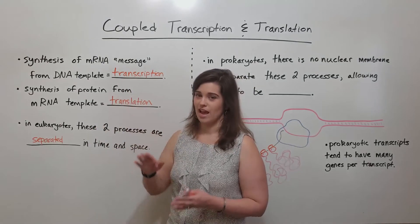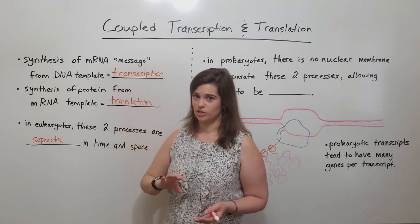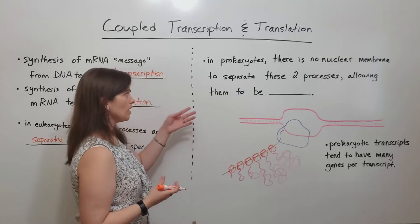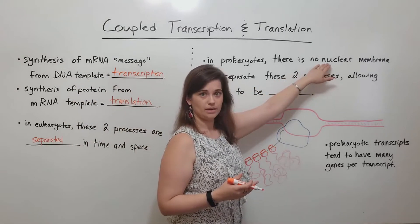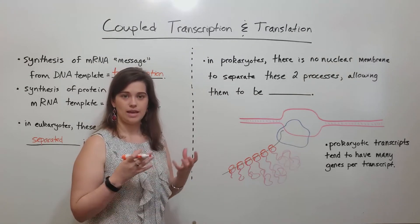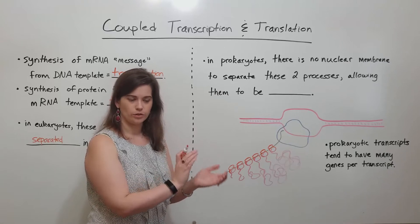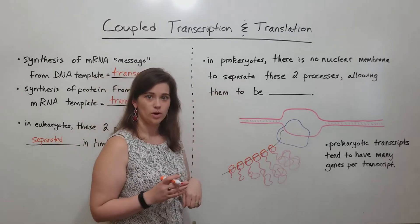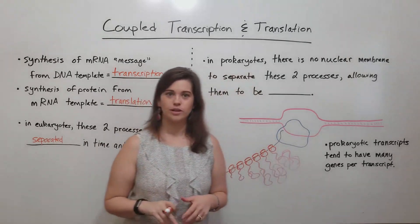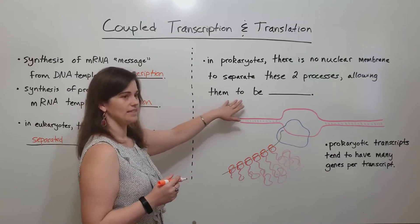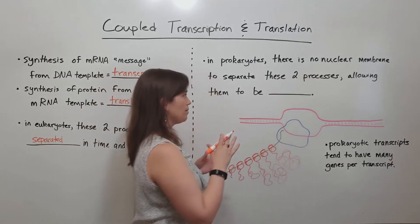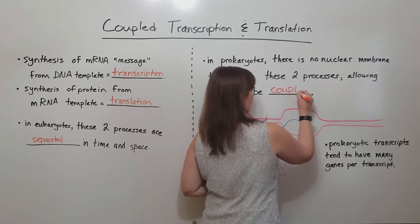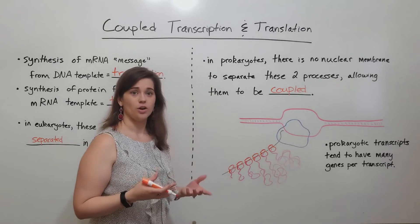So in eukaryotes, transcription and translation happen in different places — transcription happens first, and then translation happens second. In prokaryotes, on the other hand, which includes all bacteria as well as a type of cell called archaea, there is no nuclear membrane, and so the DNA is just free-floating in the cytoplasm. It is typically constrained to a particular region of the cell, but there's still no nuclear membrane completely compartmentalizing it. So there's no nuclear membrane to separate these two processes, which means that transcription and translation can actually be occurring simultaneously. This is what we call coupling — the fact that there's no nuclear membrane to separate these two processes is what allows them to be coupled, meaning they are occurring at the same time.